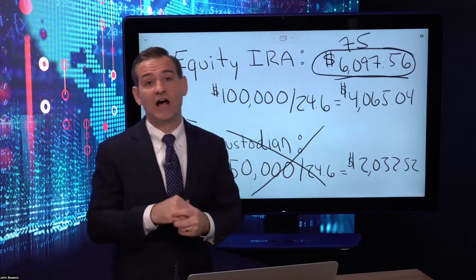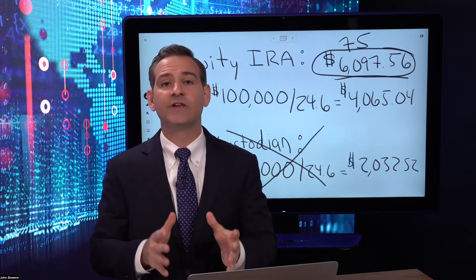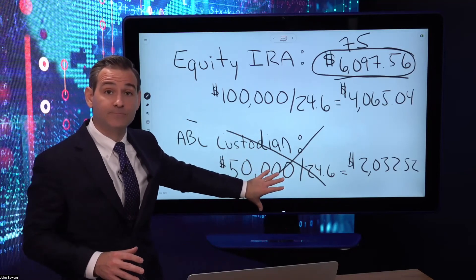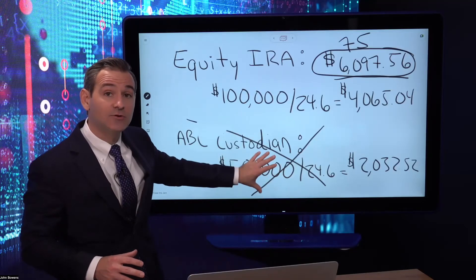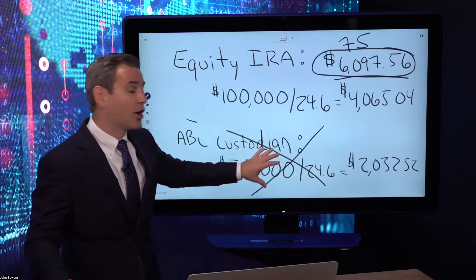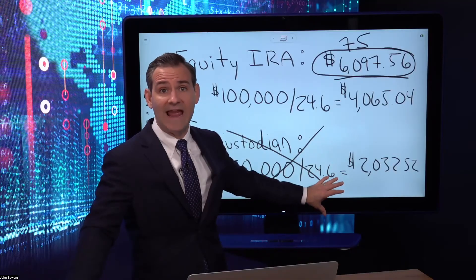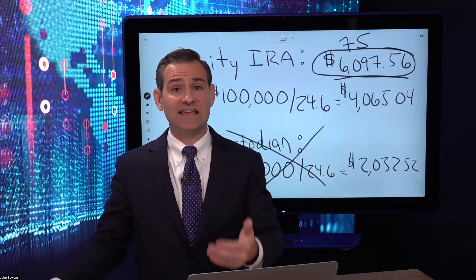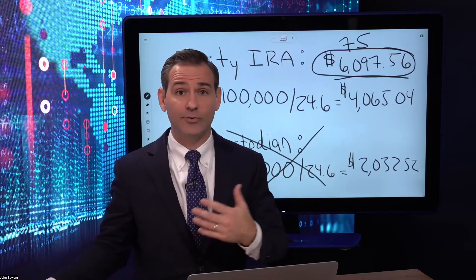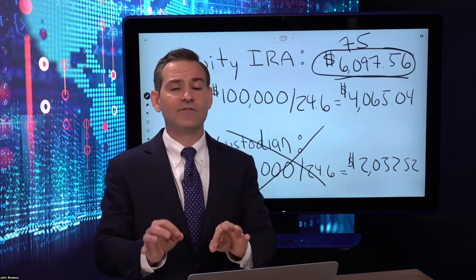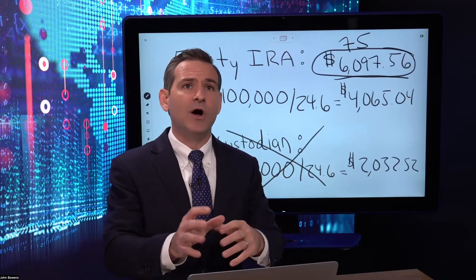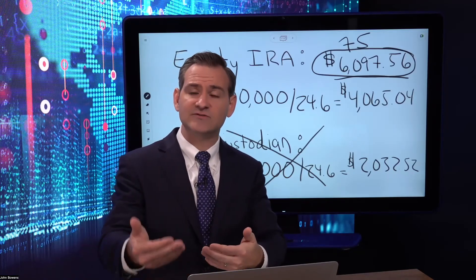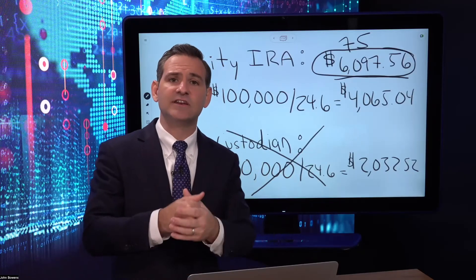Those are some of the options John has for satisfying required minimum distributions when holding private securities. In recap: if you have cash in a tax-deferred IRA elsewhere, you can calculate your combined required minimum distribution and satisfy the RMD from that account. If you don't have that option or would prefer, you can take a distribution of private securities like real estate or precious metals in an in-kind fashion. For assets like real estate, private stock, or other privately held investments, you must get a valuation performed, provide that update to Equity Trust, and then initiate the distribution accordingly.